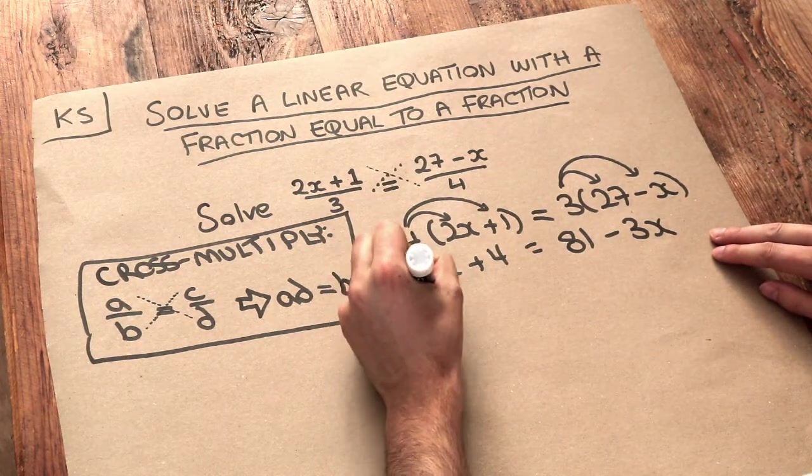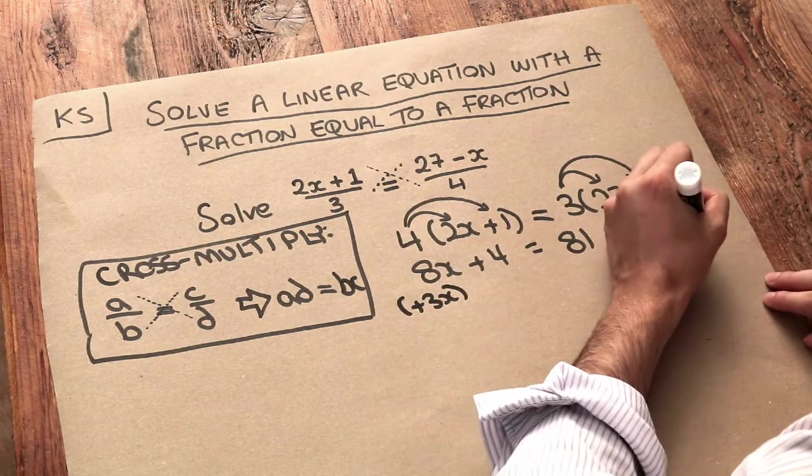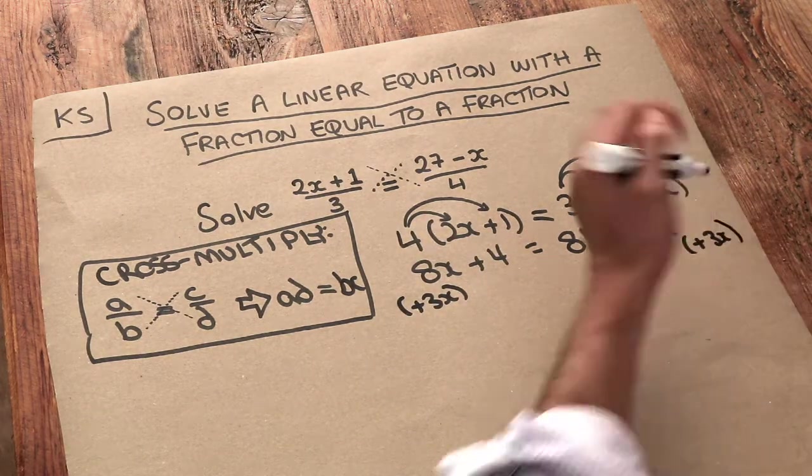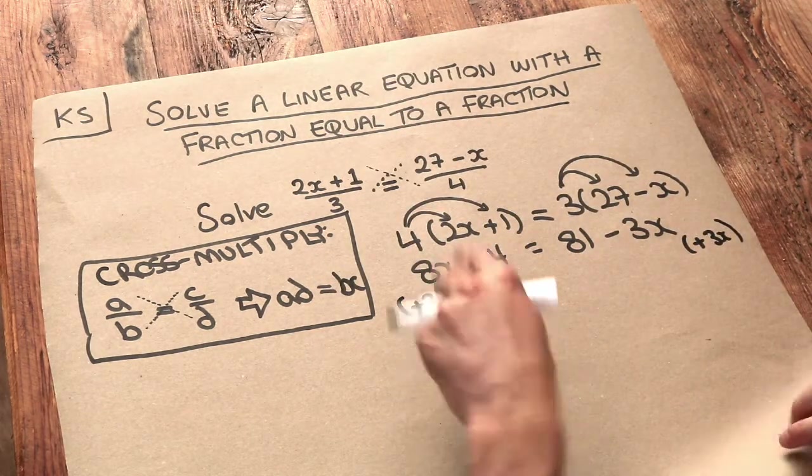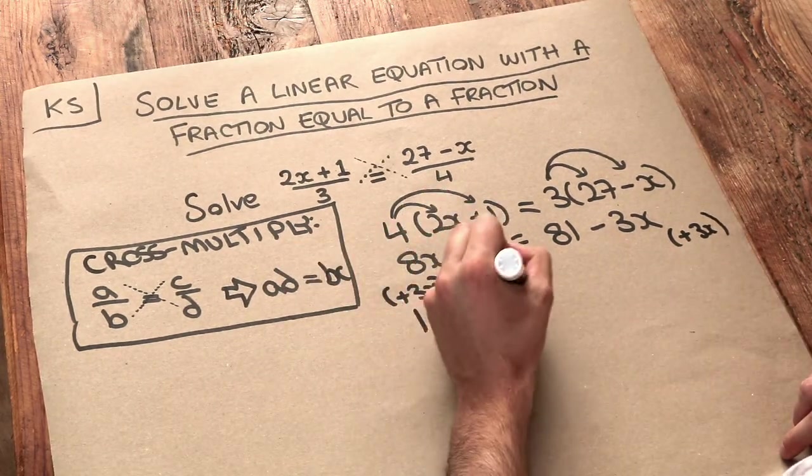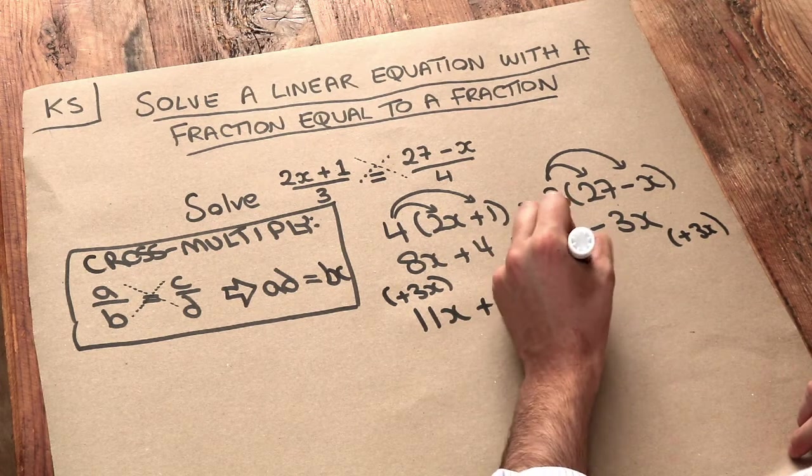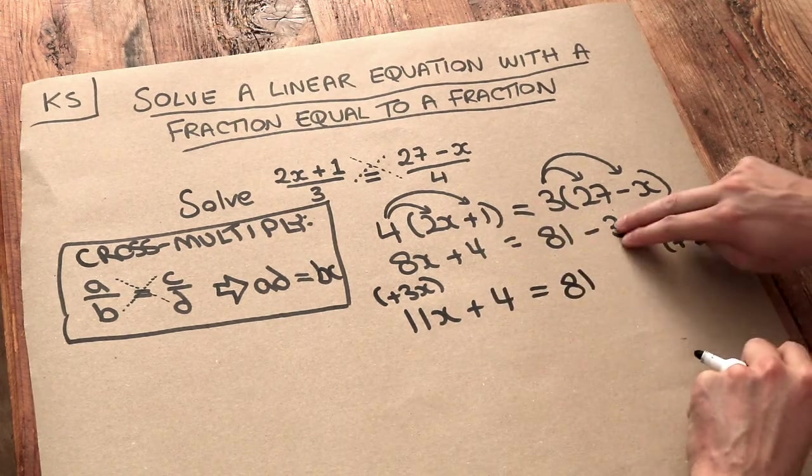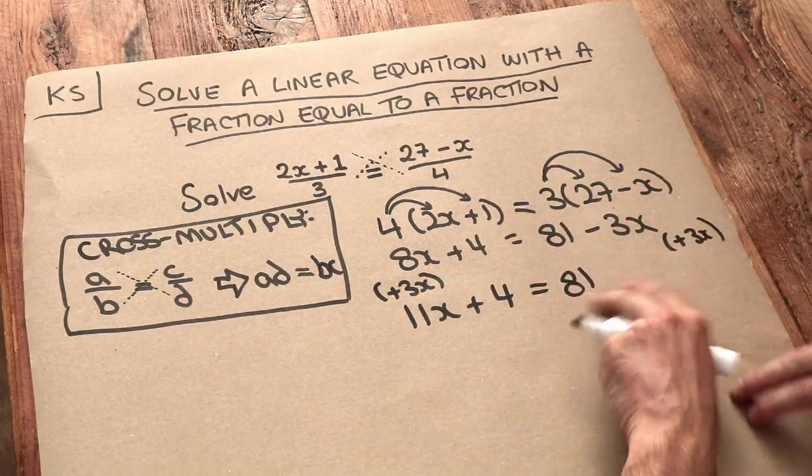Well, we do the opposite—we add 3x. What we do to one side, we have to do to the other side of the equation to keep it balanced. So 8x plus 3x is 11 lots of x. We've still got that plus 4, we've got the 81 still, and adding the 3x gets rid of that minus 3x, so we're just left with 81.